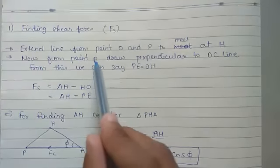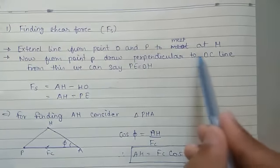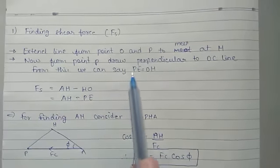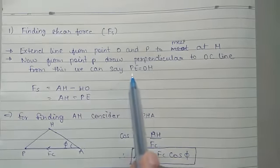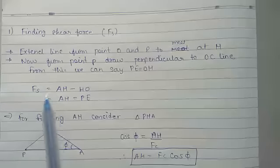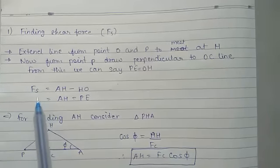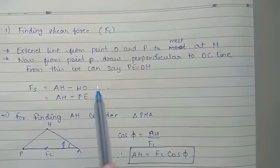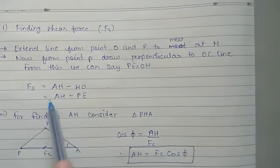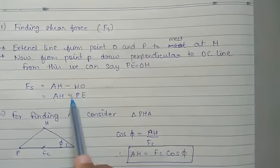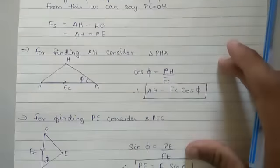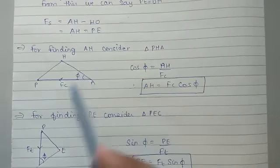From point B we drop a perpendicular to OC line. From this assumption we can say P is equal to OH. So shear force Fs is equal to AH minus AO. We can write AH is equal to PE. We need to find AH and P.